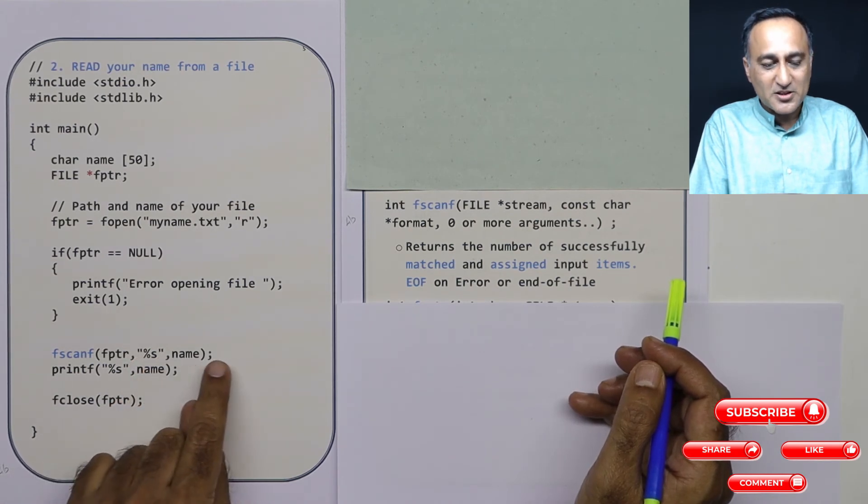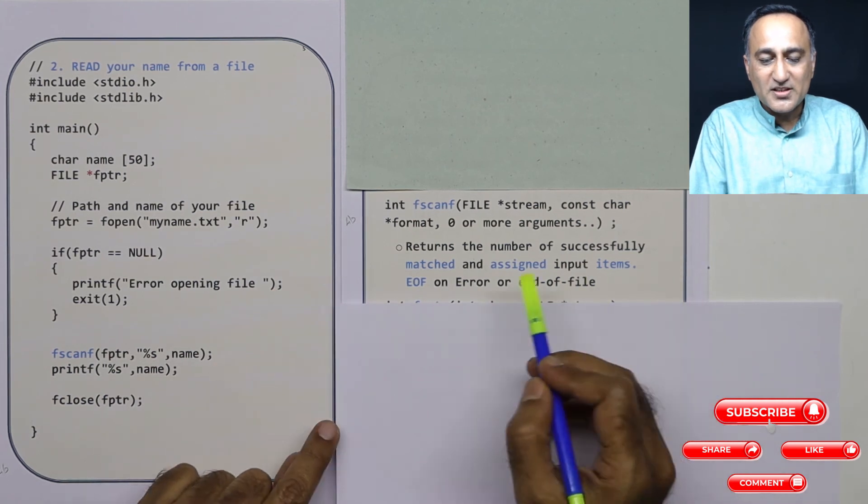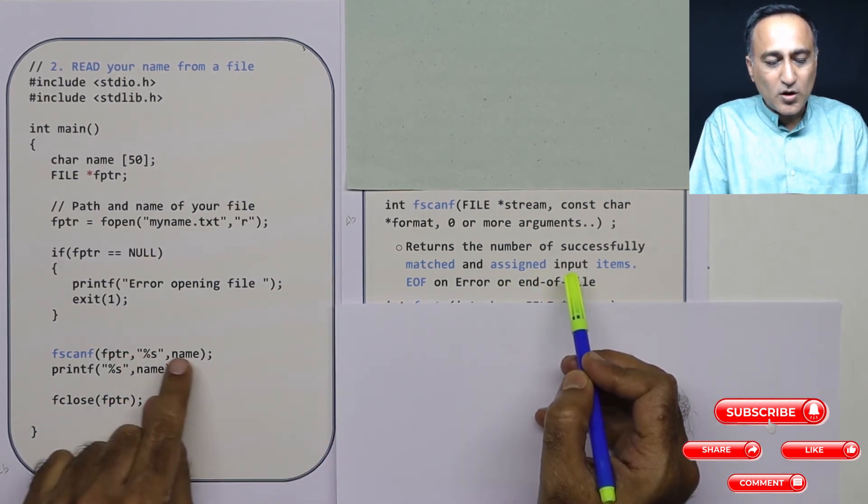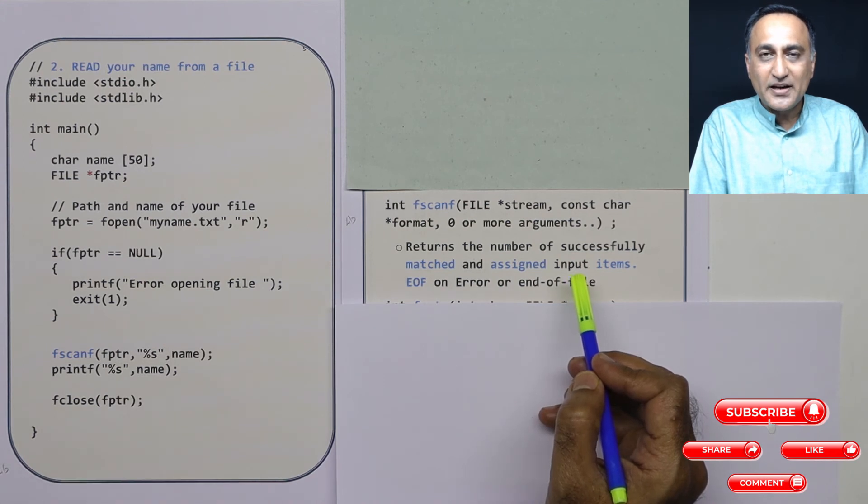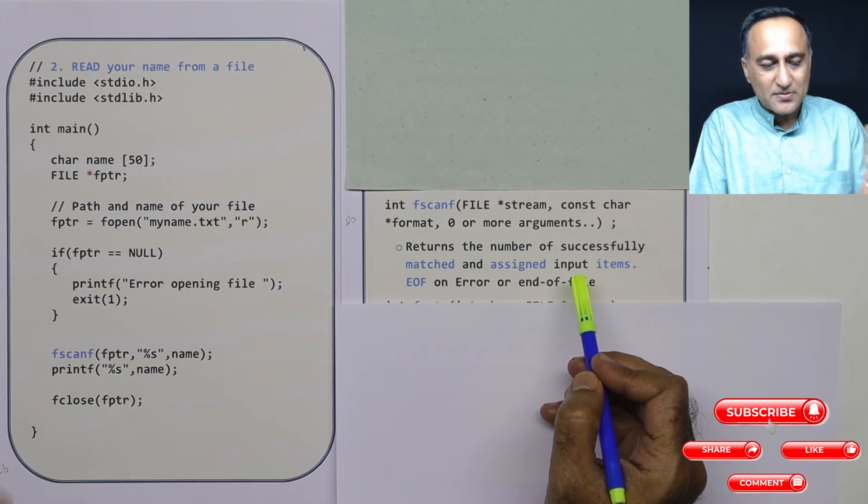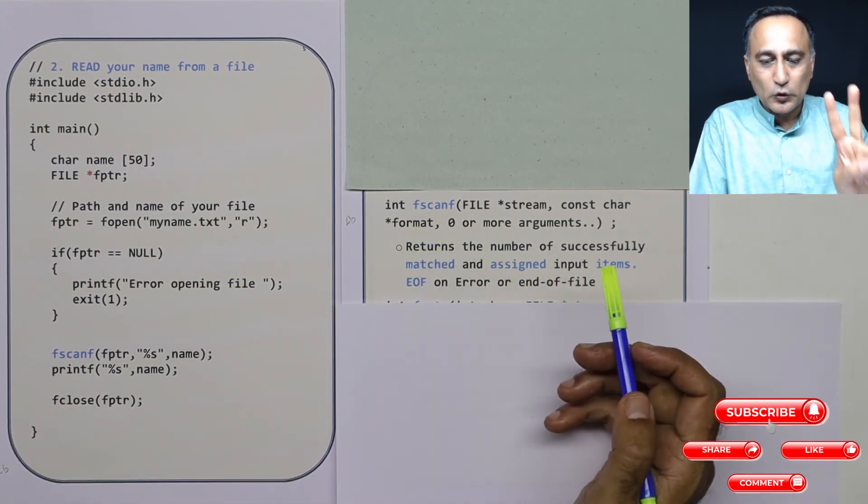So what it's trying to say is there are two control strings, both match with name1 and name2, and I'm able to read data into both name1 and name2. Since I'm able to read two items, fscanf will return an integer value of two.